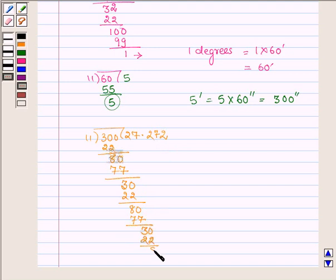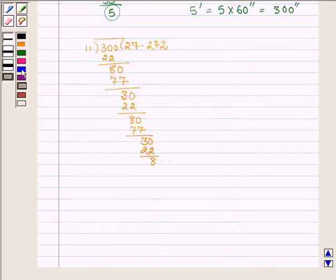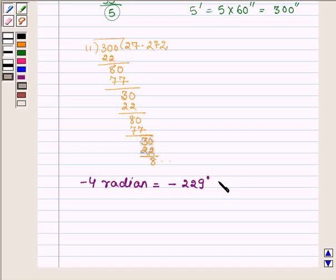That we can say that minus 4 radians is equal to minus 229 degrees 5 minutes and 27 seconds.